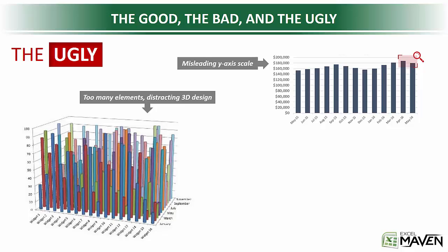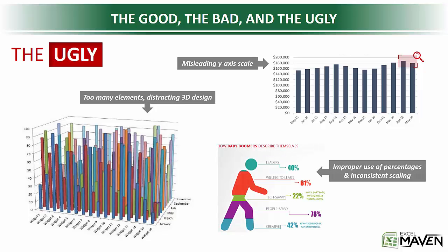So that's why it can be really dangerous to incorporate misleading axis scales. Last but not least, or perhaps last and least, we have this infographic style visual which uses improper use of percentages — they don't add up to 100%. On top of that, we've got inconsistent scaling, so somehow the 78% slice is actually thinner than the 61% slice. In this case, the visualization actually does nothing but detract from the data itself.